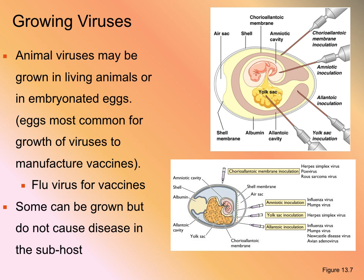If I want to grow animal viruses, I can do it in one of two ways. Most animal viruses used in the pharmaceutical industry for vaccine purposes are grown either in a living animal — which can be unethical if it makes the animal sick — or they can be grown in embryonated eggs. Eggs are the most common vessel in which viruses are grown, mostly to manufacture vaccines. For example, the flu virus is always grown in eggs. There are all kinds of different places inside of an embryonated egg where these different viruses can be grown.